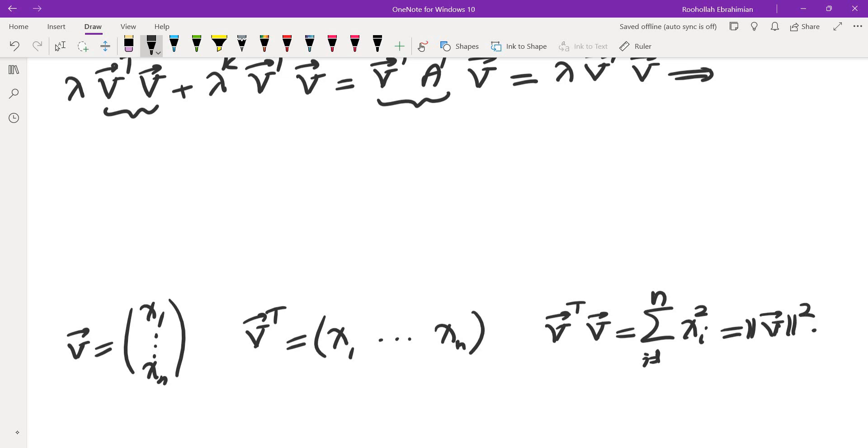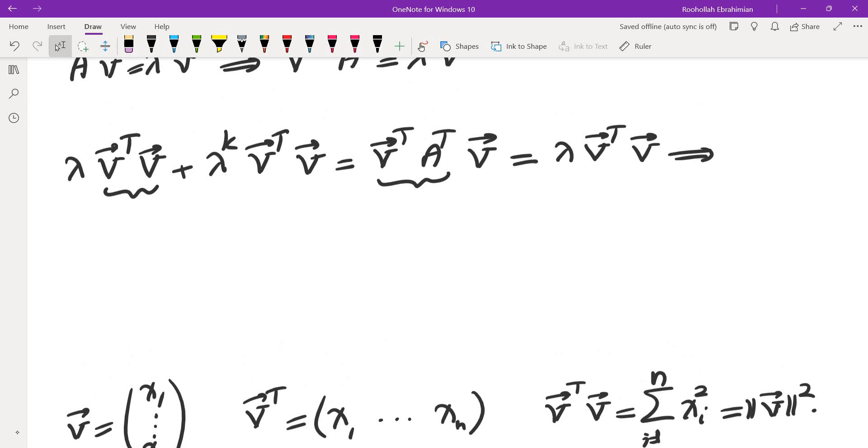And this is just the magnitude of V squared. This is for real vectors. So I'm going to use this fact. This is a well-known fact. You can just use that. So this is lambda. In fact, this part cancels. So I'm going to use it for the other part. This is lambda to the power of K magnitude of V squared.